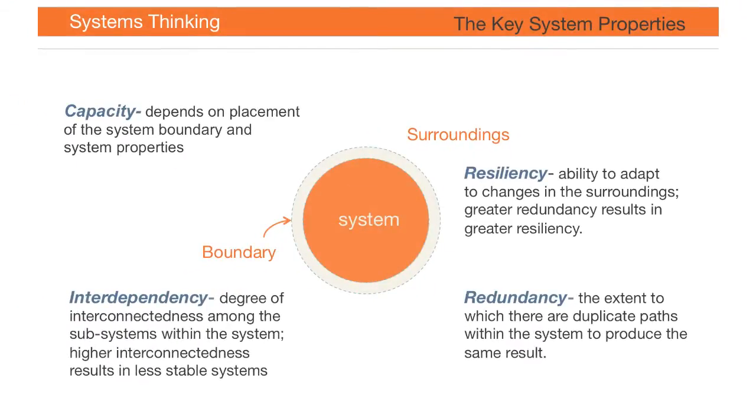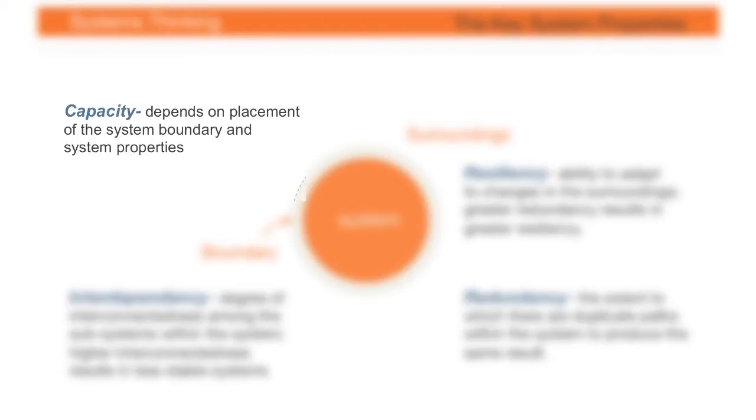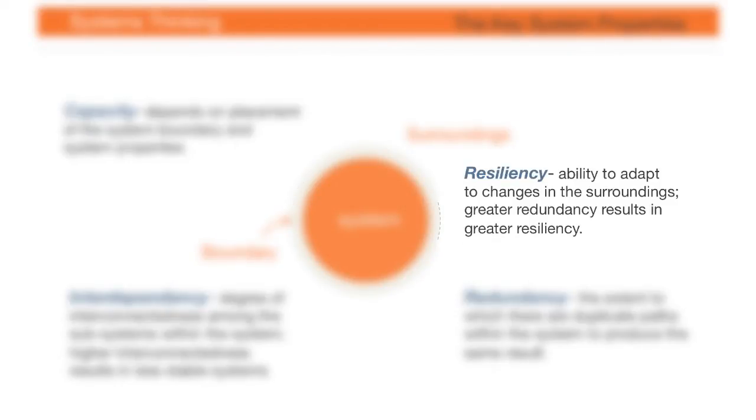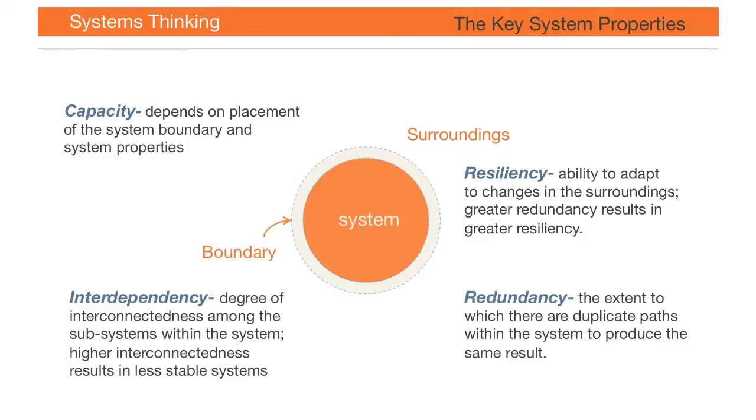So these are the four properties: interdependency, redundancy, capacity, and resiliency. These four qualities describe the nature of a system.